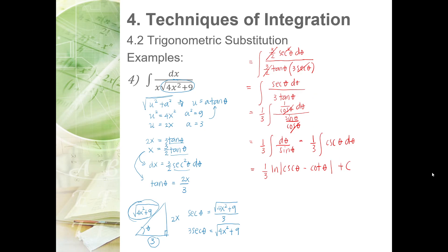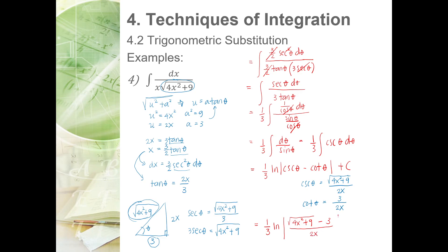From the triangle: cosecant theta is hypotenuse over opposite side equals the square root of 4x squared plus 9 over 2x, and cotangent theta is adjacent side over opposite side equals 3 over 2x. Combining over the common denominator 2x, the final answer is one-third times ln of the square root of 4x squared plus 9 minus 3, all over 2x, plus C.